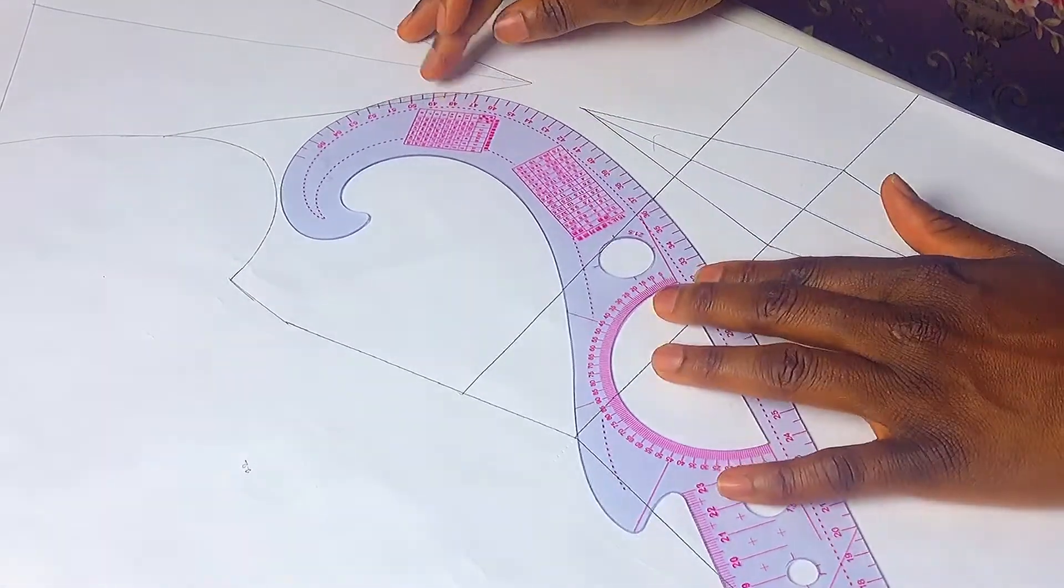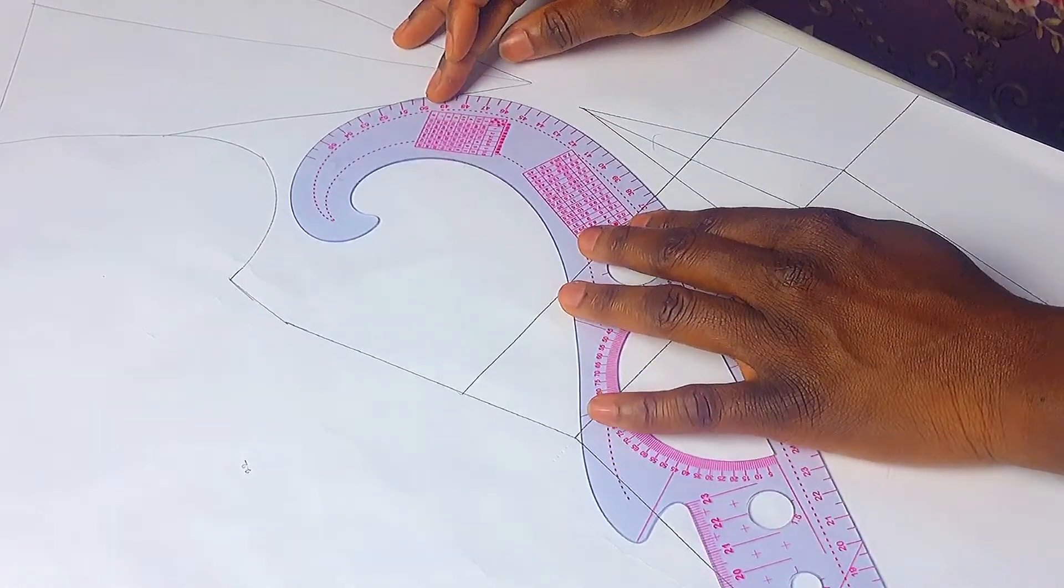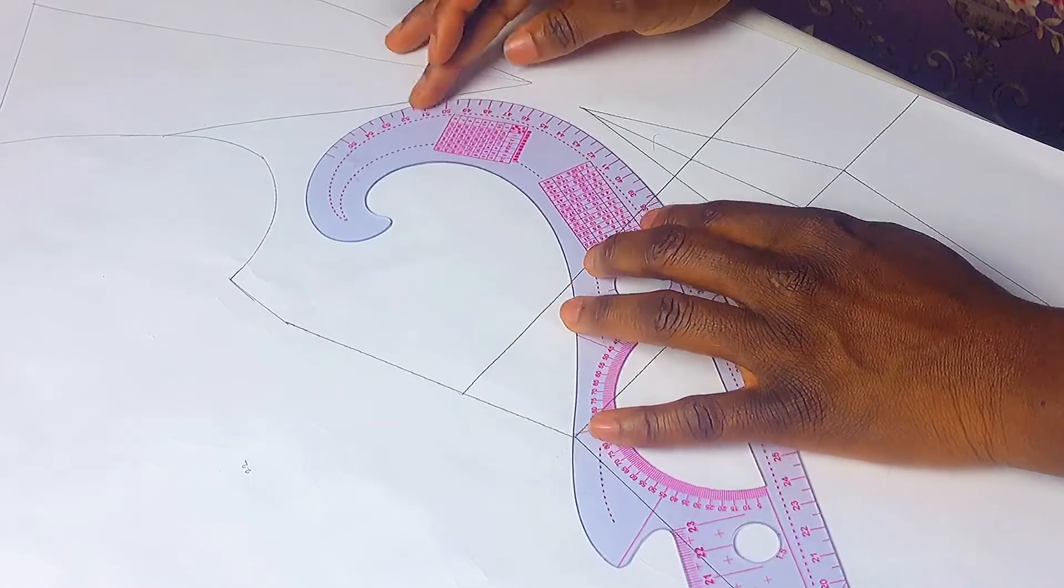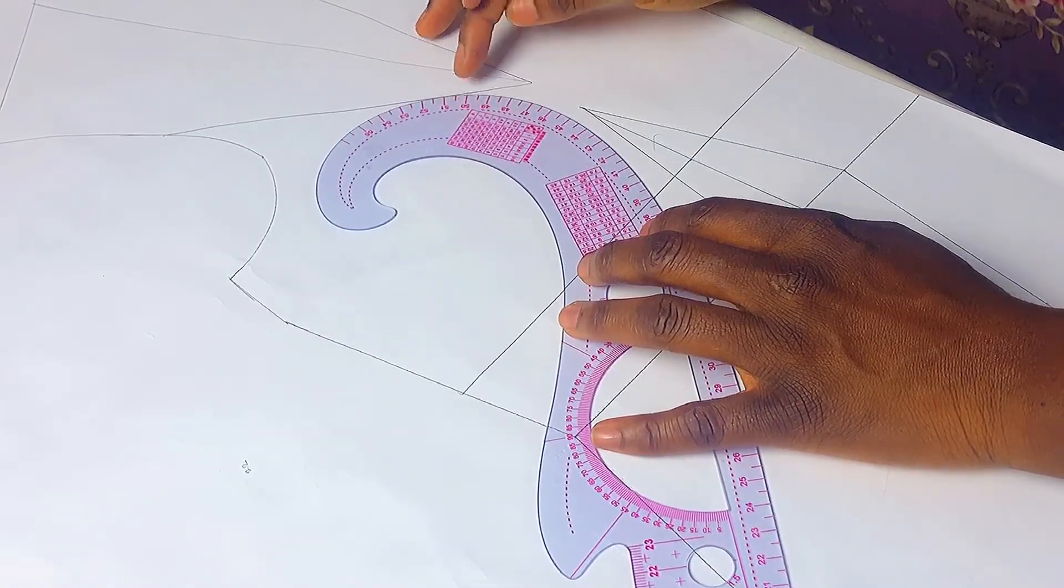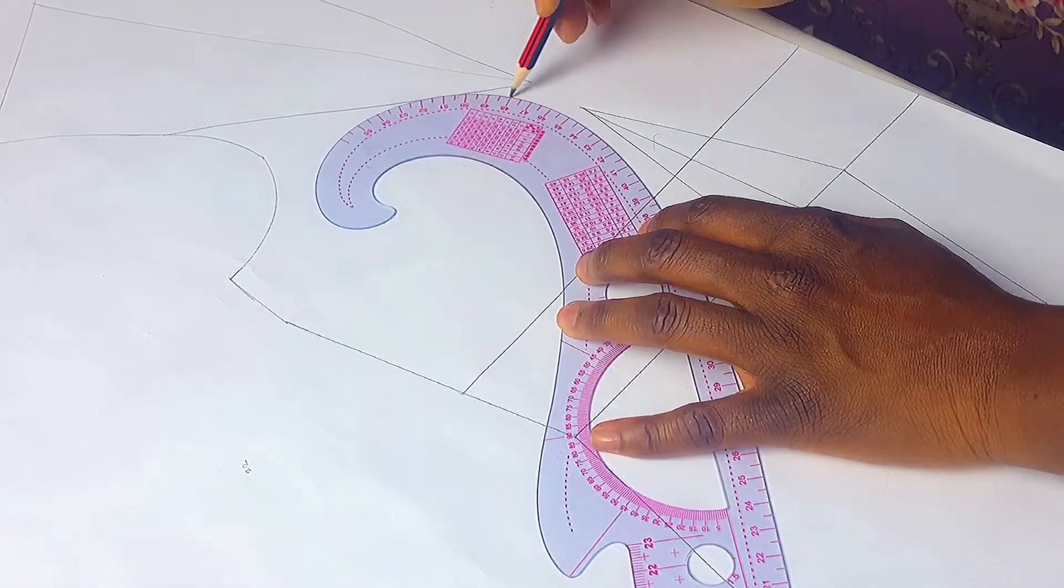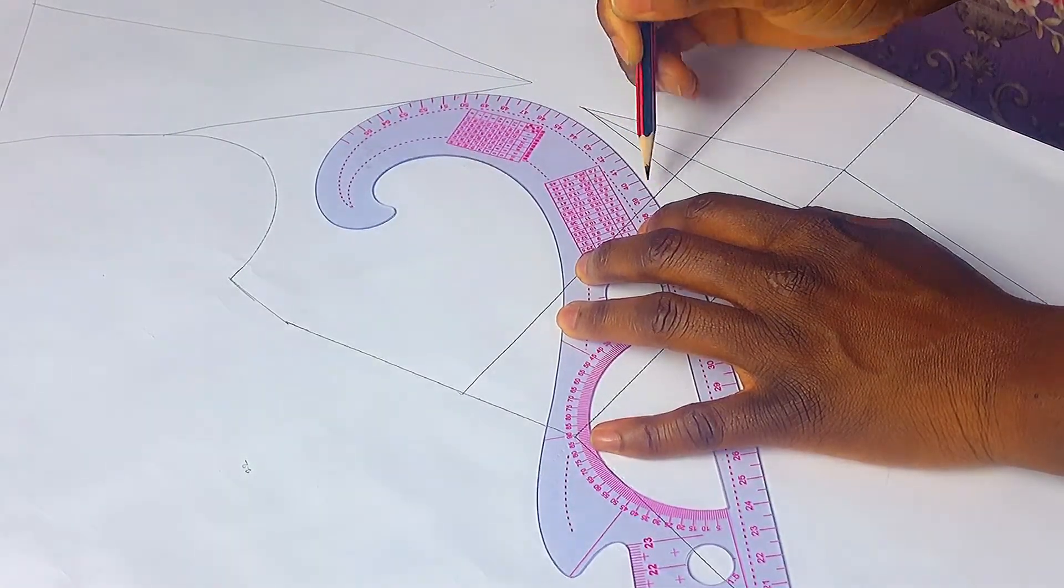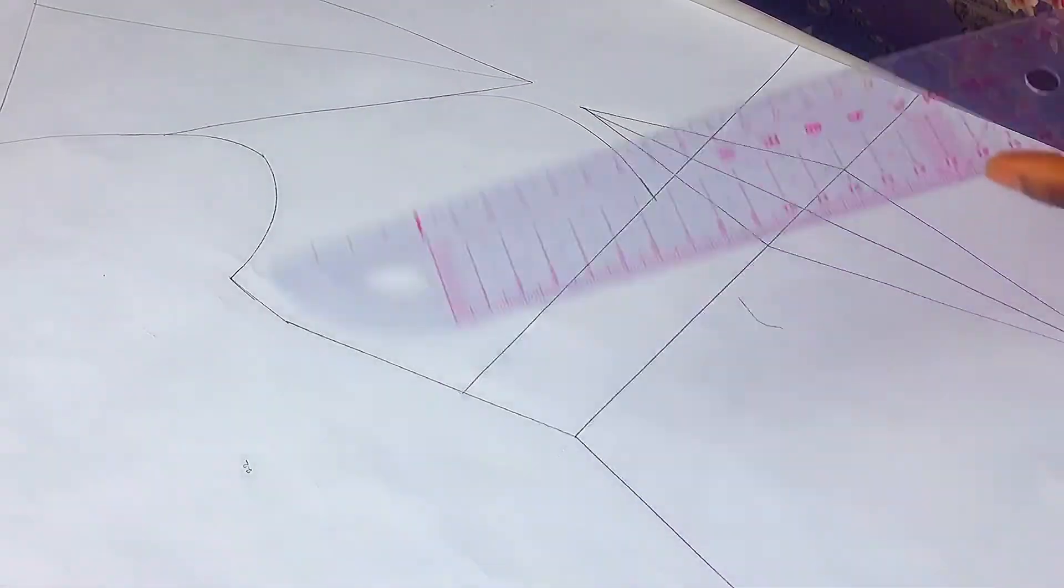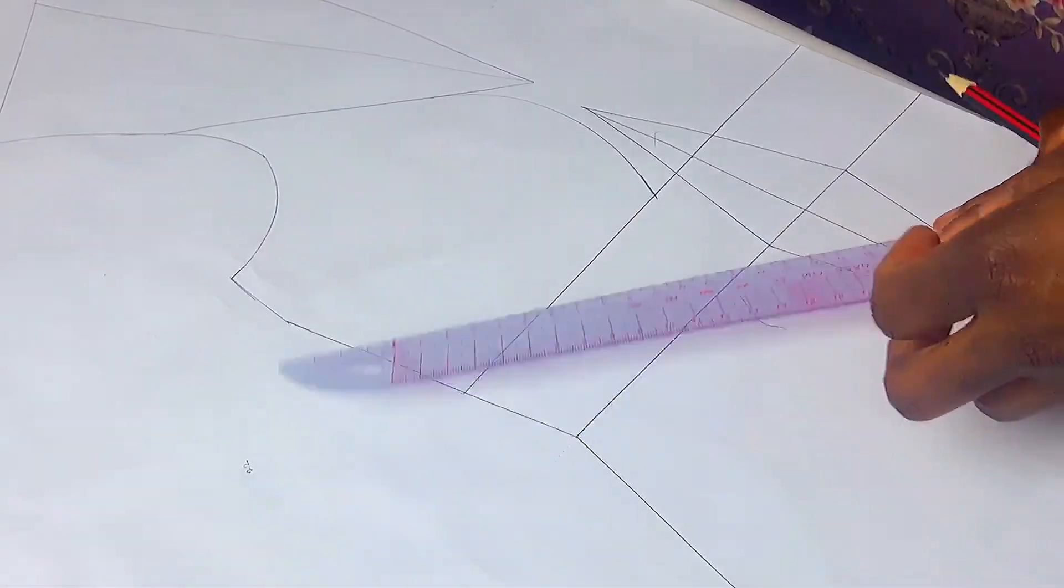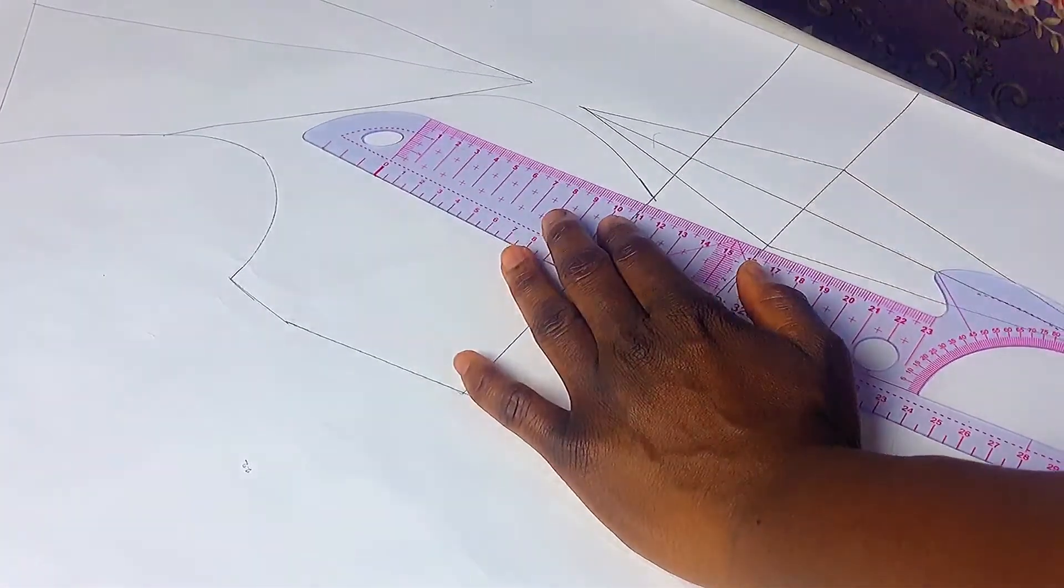This is where my princess dart seam will start from. Using that line as your reference now, I used a curved ruler to connect to my underbust tightening then down to my waist to one leg of my waist dart.